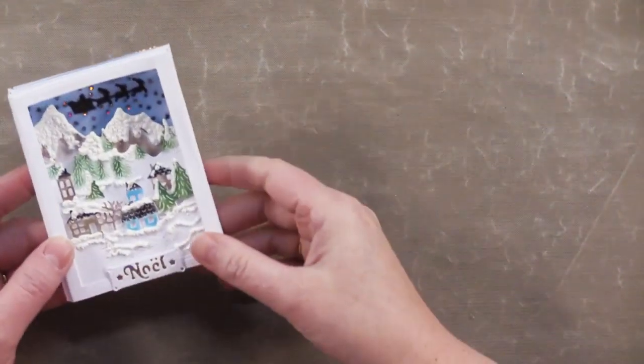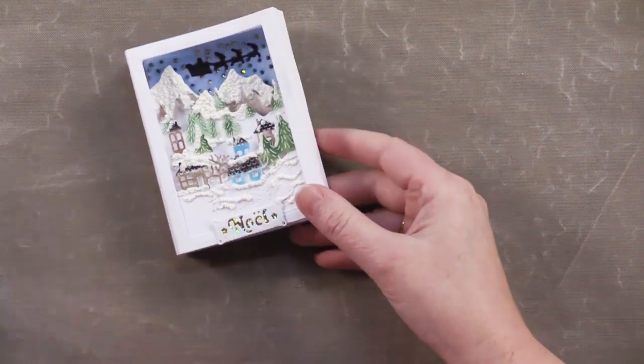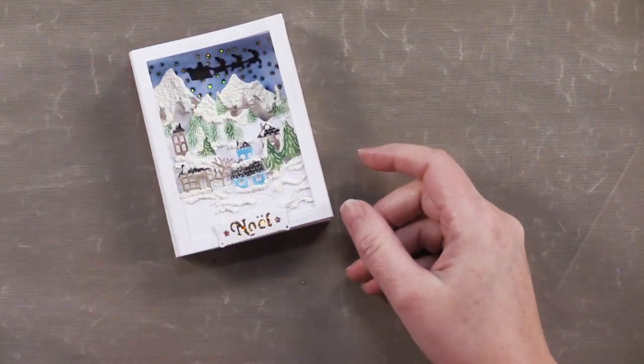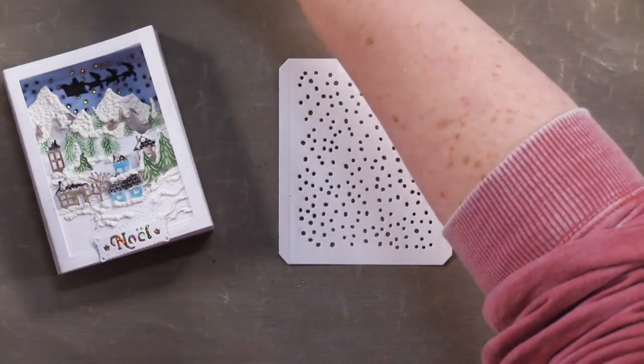I'm going to show you the coloring techniques first and then I'm going to show you how to assemble it. So don't worry, we're going to see it all. So the first thing I did was the very background here. Oh, I should show you how the dies look.